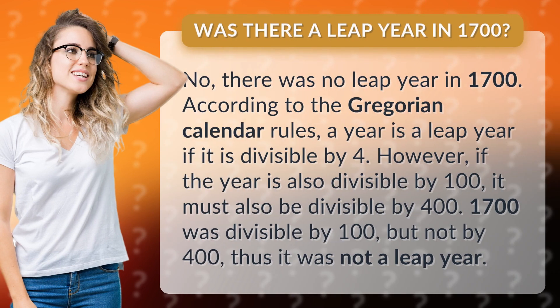According to the Gregorian calendar rules, a year is a leap year if it is divisible by four. However, if the year is also divisible by 100, it must also be divisible by 400. 1700 was divisible by 100, but not by 400, thus it was not a leap year.